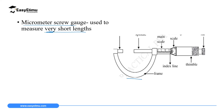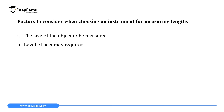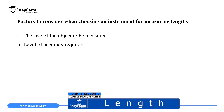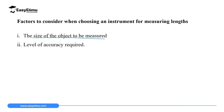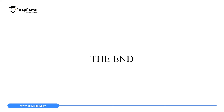Before choosing an instrument to measure length, you must consider various factors. The first factor is the size of the object to be measured — for example, you cannot use a micrometer screw gauge, which measures very short lengths, to measure the length of a football field; instead you would use a surveyor's tape measure. The second factor is the level of accuracy needed — you must choose an instrument that provides the required accuracy.